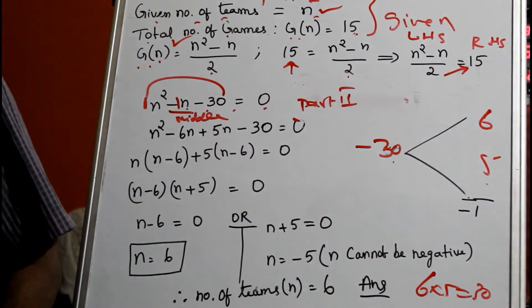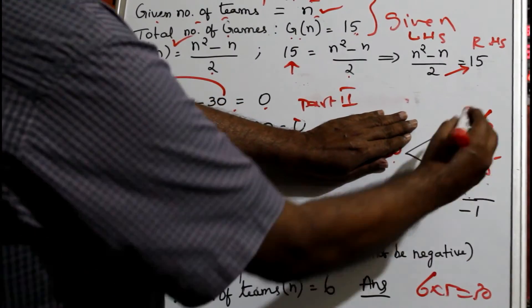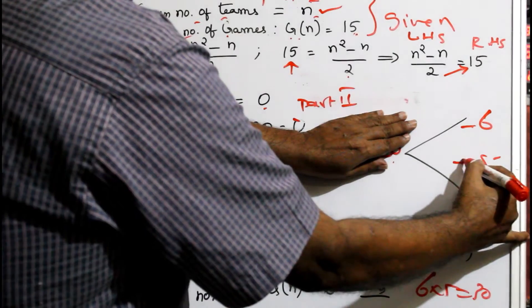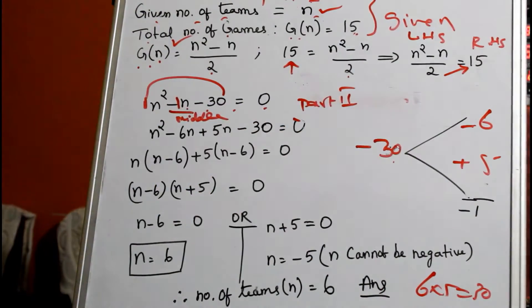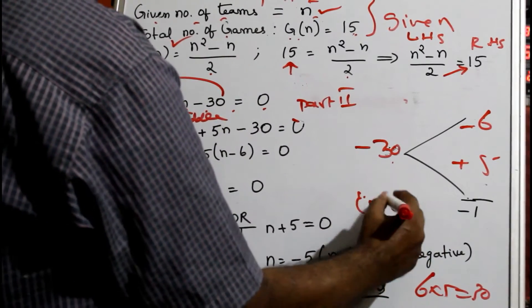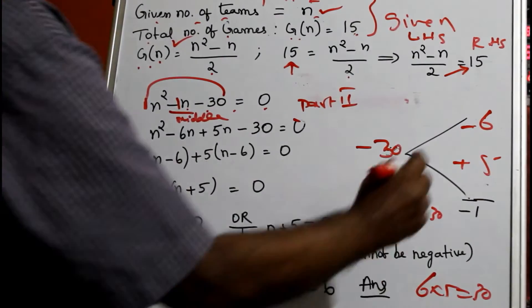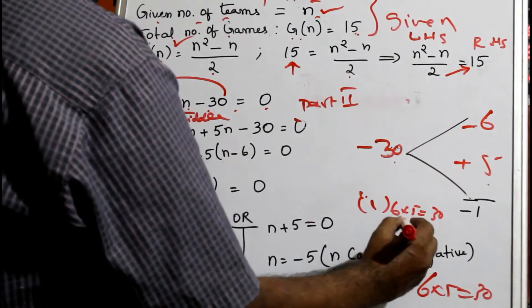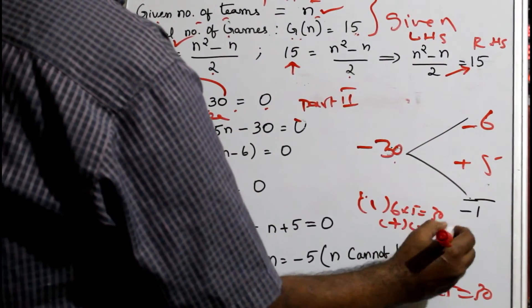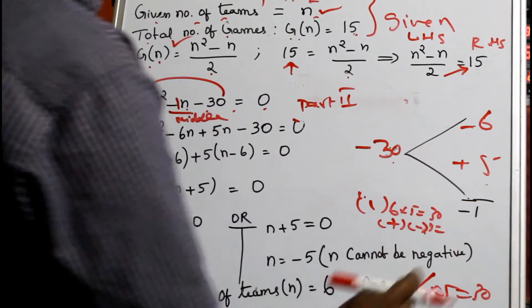Don't worry about the sign first; first find the factors. Now put the 6 and 5. I didn't put any sign; 6 × 5 = 30, 6 - 5 = 1. To put the sign, always hide this, so this will be -6 + 5. You can check it now. Plus into minus equals minus.